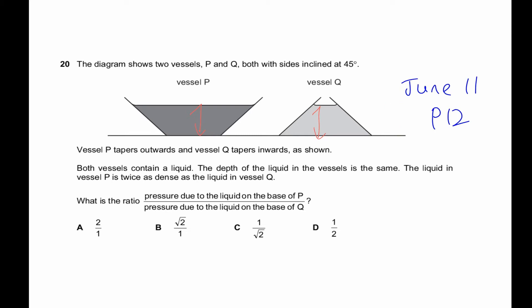Coming back to this question, if I wanted to use the vertical height to calculate the pressure, I would use this formula. Now since P equals hρg, I would actually use the ratio of pressure of P over pressure of Q. What is the same for both? h and g, because they told me they have the same depth and g, acceleration of gravity, will always be the same.